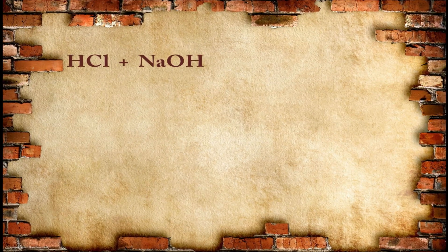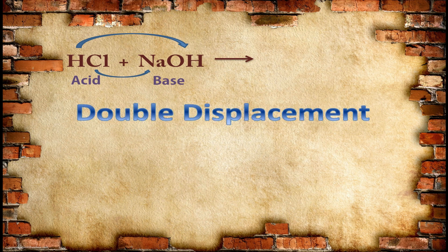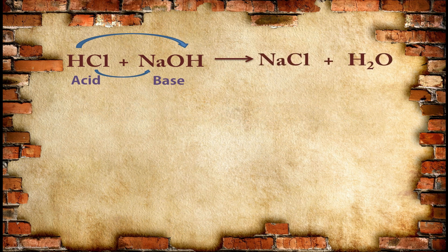For example, HCl is an acid and sodium hydroxide NaOH is a base. When these two react with each other, hydrogen combines with the OH⁻ ion of the base, and the negative ion of the acid combines with the positive ion of the base. A double displacement reaction takes place — they switch their partners — so the products formed will be NaCl, which is a salt, and H₂O, which is water.